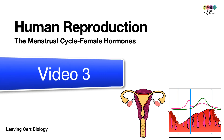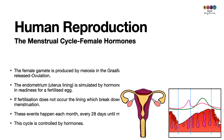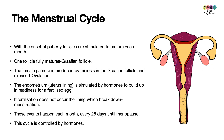This is video number three on human reproduction, covering the menstrual cycle and the hormones that control it. With the onset of puberty, follicles are stimulated to mature each month in the female ovaries. A follicle contains an immature egg surrounded by other cells.